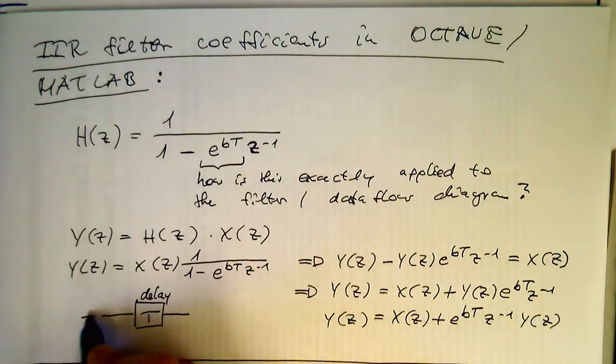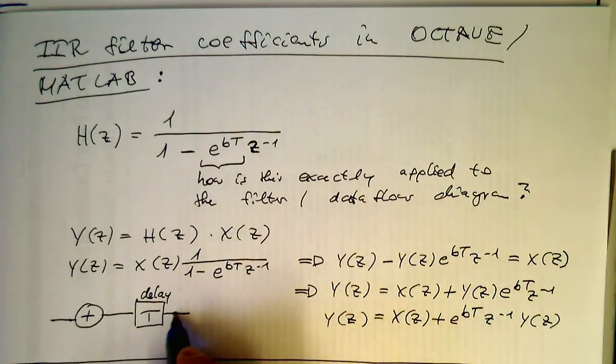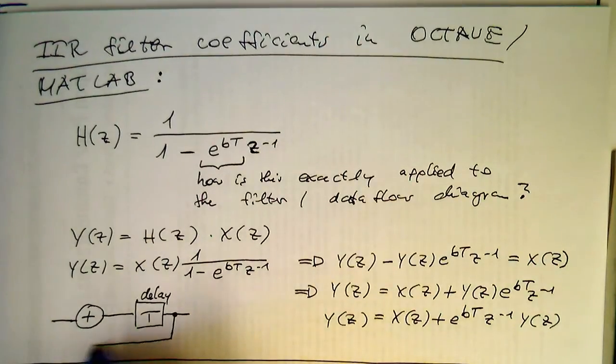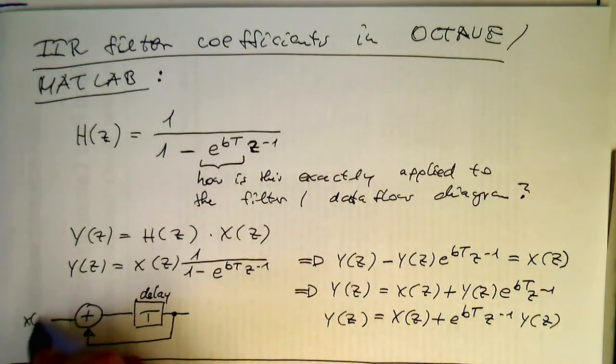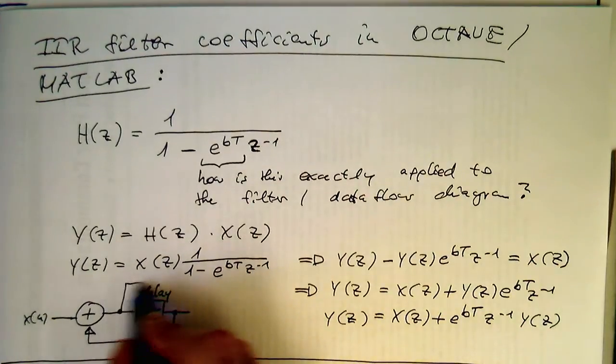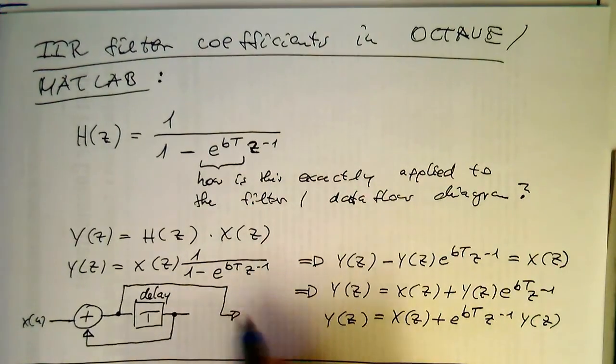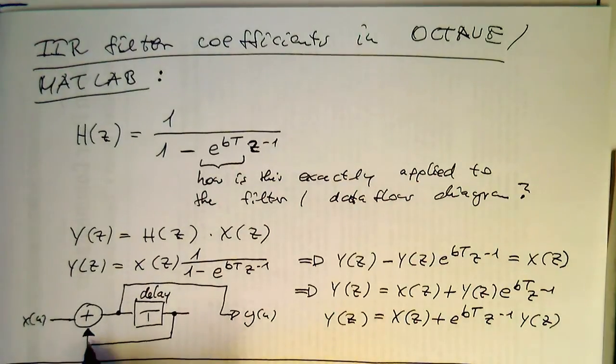And then we have a summation at the input here and we feed this delayed output back in here. And so now, that's our X of N and our output is somewhere here. So that's our Y of N and so now the question is about the sign of this feedback here.